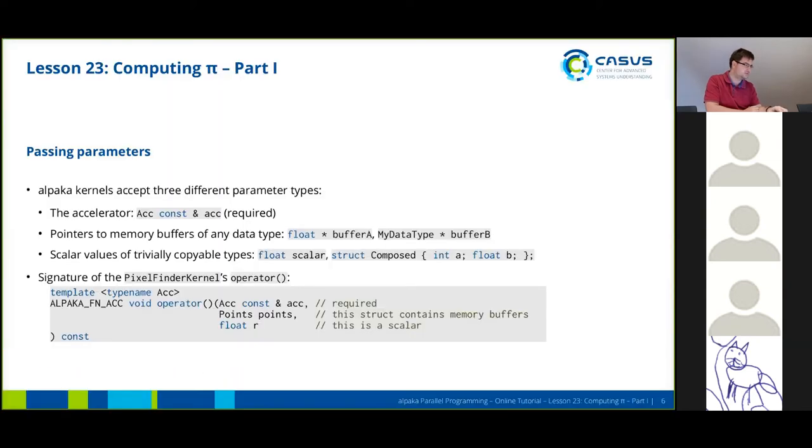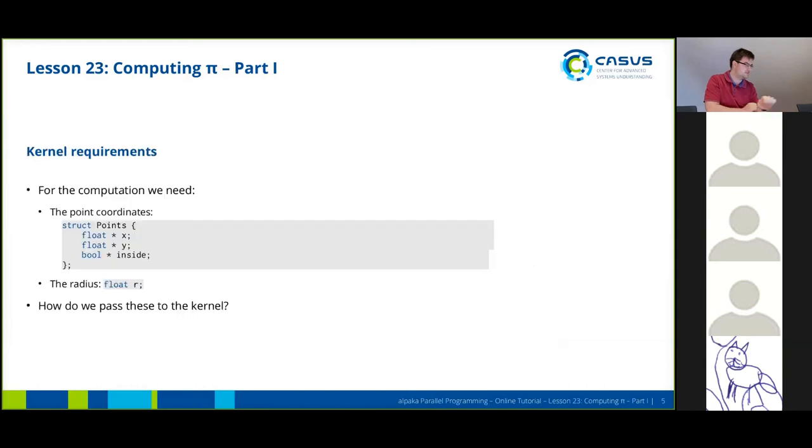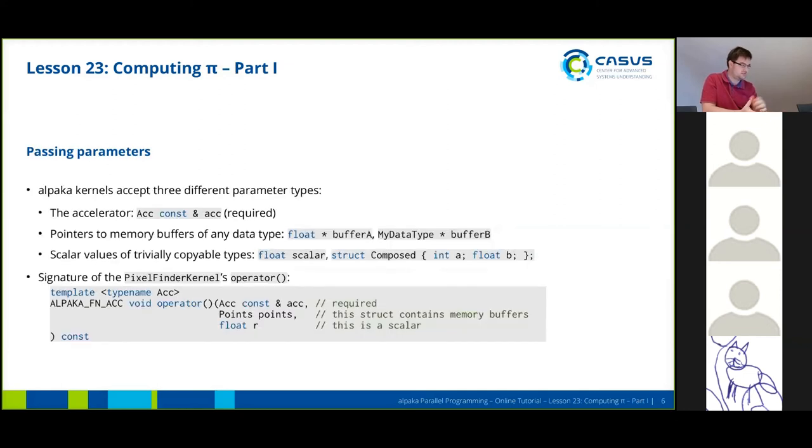I think I skipped this slide. So this is how our point struct looks like. Inside the struct we have the coordinates x and y, and we also have a boolean that defines for a point if it is inside the circle or not.